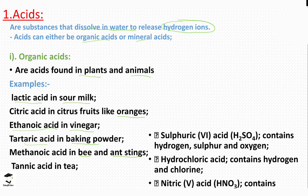We have methanoic acid, which is found in bee and ant stings. It is important to remember methanoic acid as we will mention it later when discussing applications of this topic. Bee and ant stings contain acidic properties, and the acidic solution in them is referred to as methanoic acid. We also have tannic acid, which is found in tea.